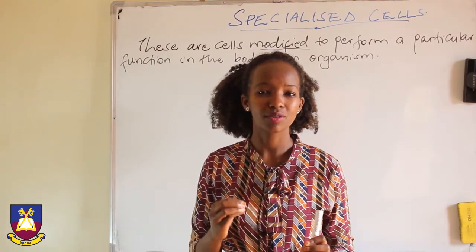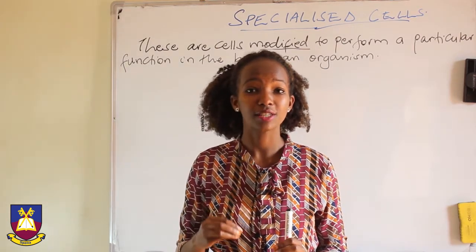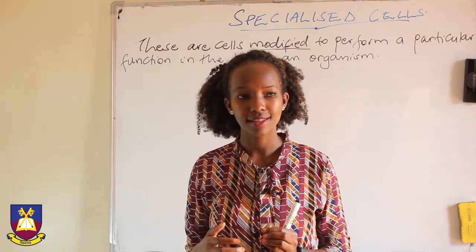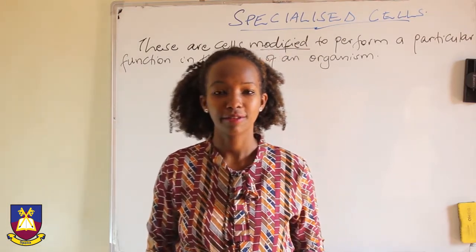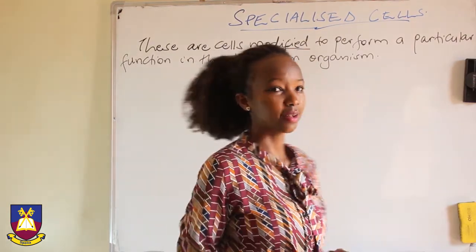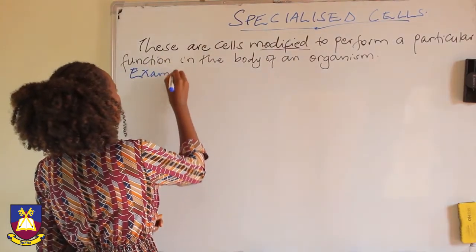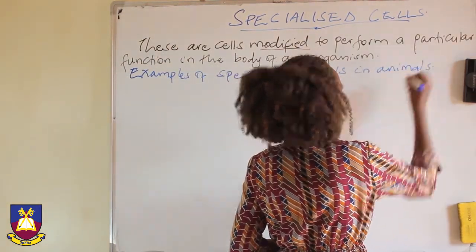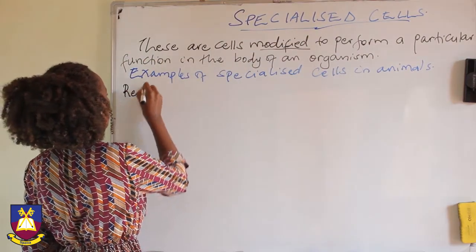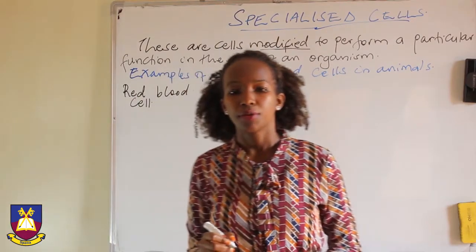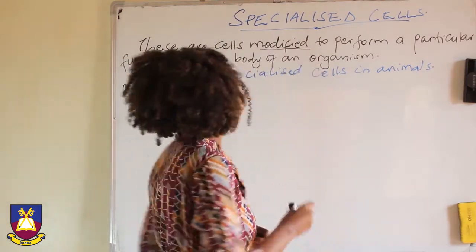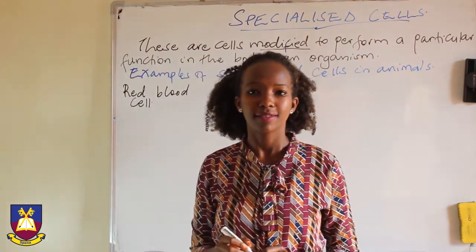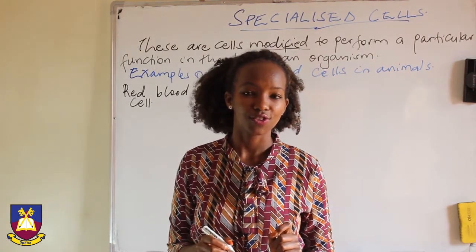Now let us start looking at examples of specialized cells within bodies of animals — the function they do and the changes that enable them to carry out that function. Let's start with the red blood cell. The red blood cell is found in blood.